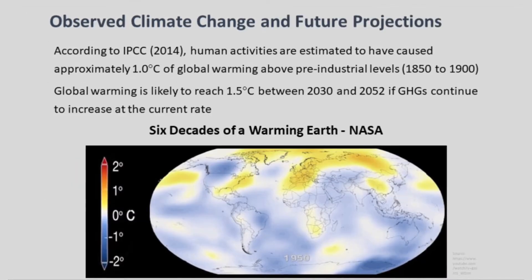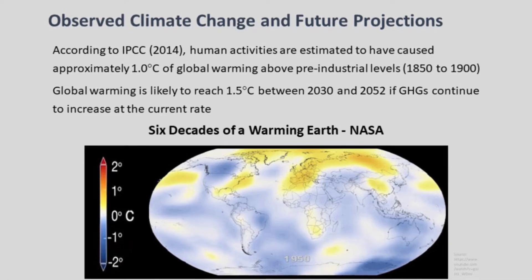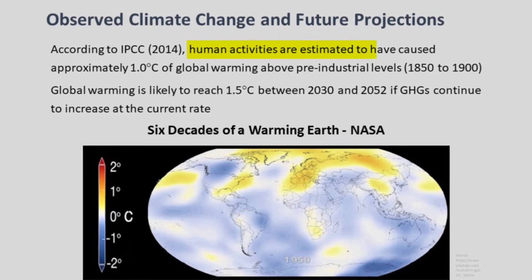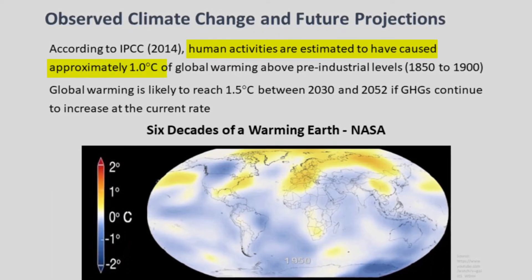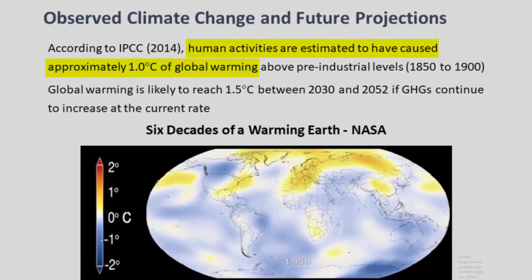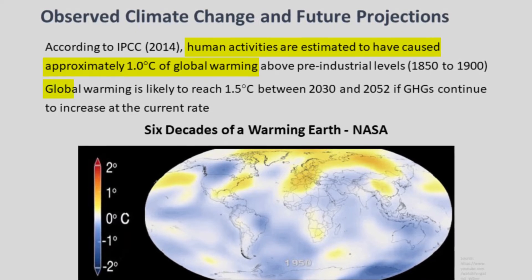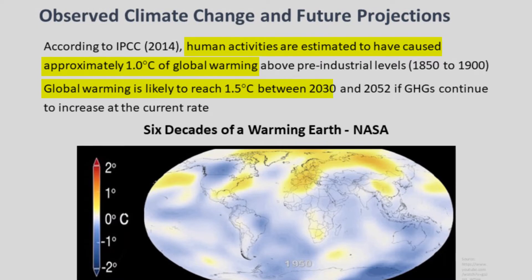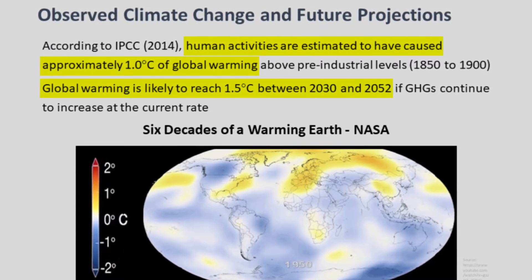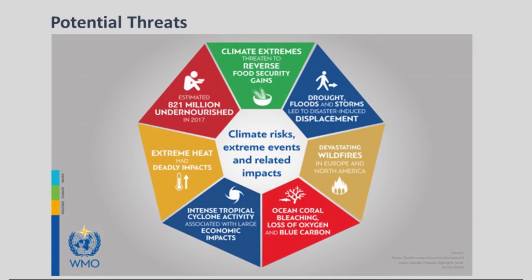According to the Intergovernmental Panel on Climate Change, or the IPCC, human activities are estimated to have caused approximately 1 degree Celsius of global warming above pre-industrial levels. If GHGs continue to increase at the current rate, global warming is likely to reach 1.5 degrees by 2050. By that year, 1.6 million people living in over 970 cities globally will be regularly exposed to extreme high temperatures, including cities such as Bengaluru, Chennai, Delhi, Jaipur and Kolkata.